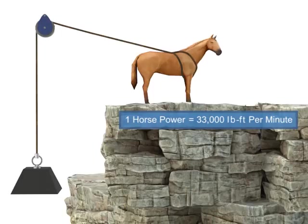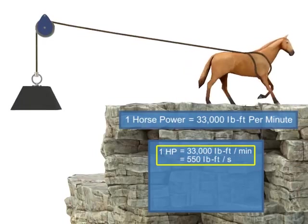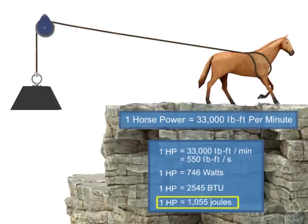In modern terms, horsepower is simply another unit of measurement for power and can be translated into watts, BTUs, joules, or any unit of power. Units that measure motor power are typically in horsepower or watts.